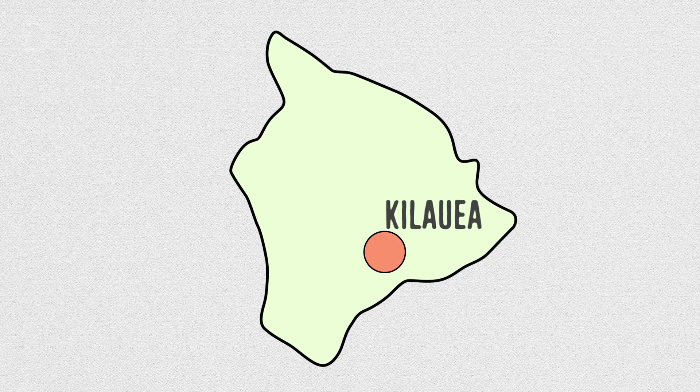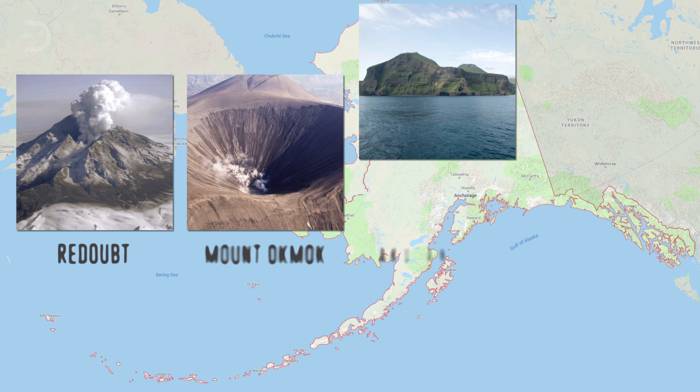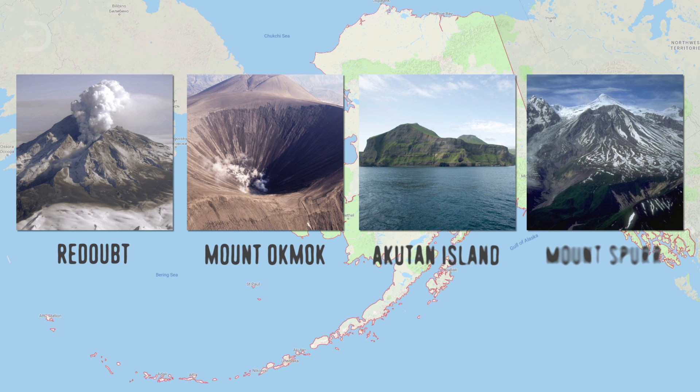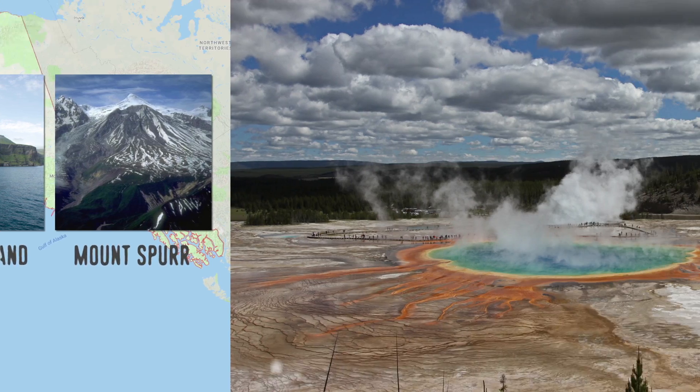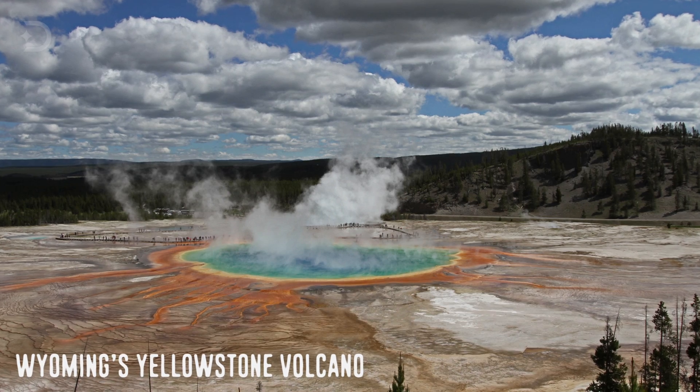Among the others that seem to be on the verge of an eruption are Alaska's Redoubt, Mount Ackmack, Akutan Island, and Mount Spur. Wyoming's Yellowstone volcano has been active and there have been small swarms of earthquakes felt in the area over the last year.